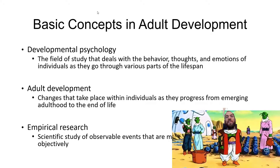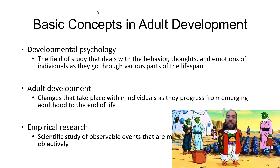Some of this is going to be definitional and construct-based, beginning with a basic definition of developmental psychology. Developmental psychology can be defined as the field of study that deals with the behavior, thoughts, and emotions of individuals as they go through various parts of the lifespan. Adult development can be defined as changes that take place within individuals as they progress from emerging adulthood to the end of life. Empirical research is the scientific study of observable events that we measure and evaluate objectively. Across all psychology, there's not a lot of agreement on fundamental definitions, but this will be our operational definition of these terms moving forward.